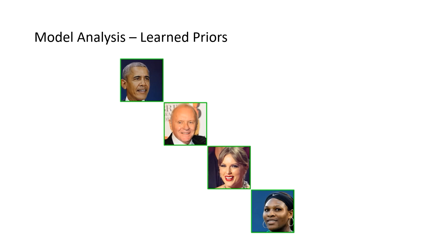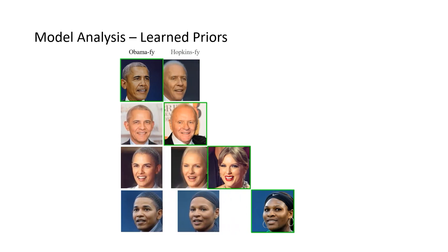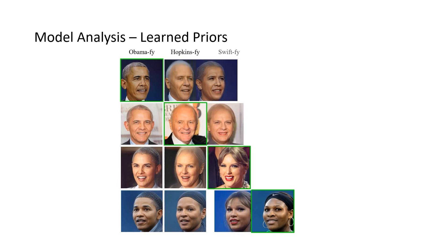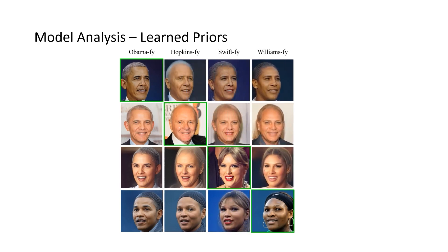Next, we want to know what information is encoded in the personalized diffusion model's weights. Here, we show four images as input. We use their physical buffers and global latent codes, then swap with another personalized diffusion model. By doing this, we can create the effect of adding someone's identity to another person, as shown in the results. These results further demonstrate that our model is able to learn personalized priors from a small dataset.